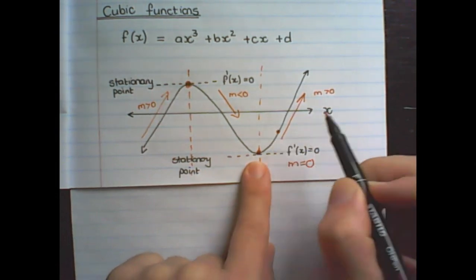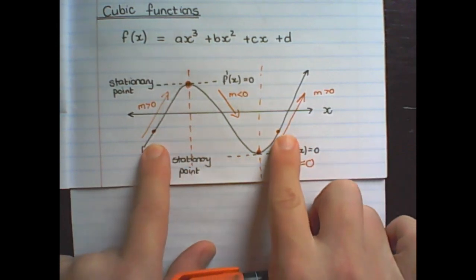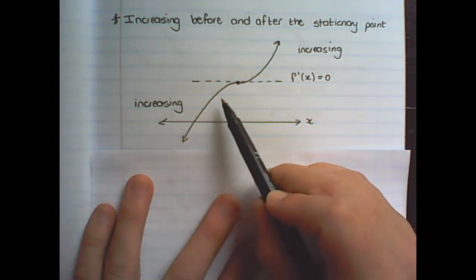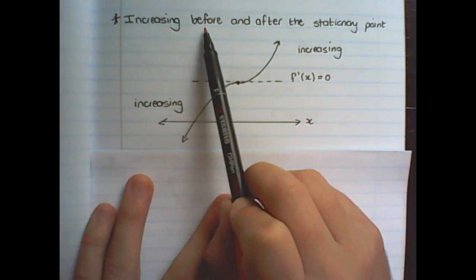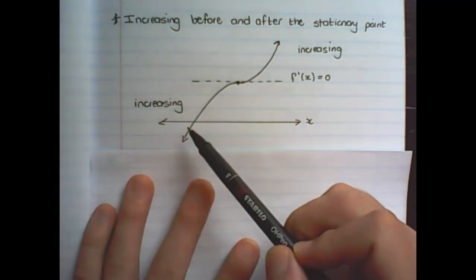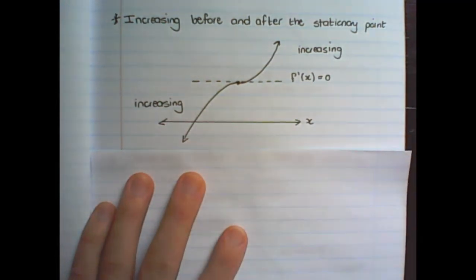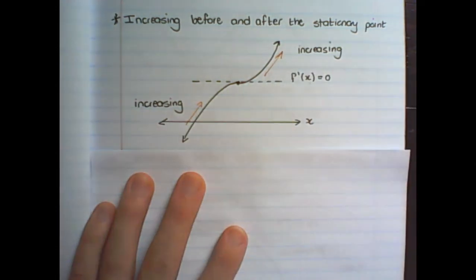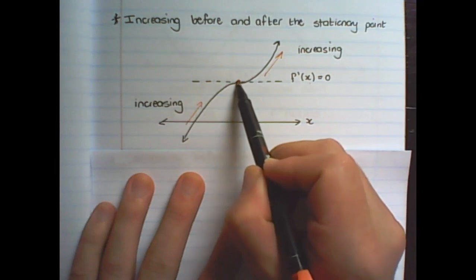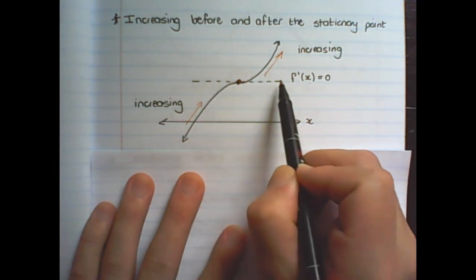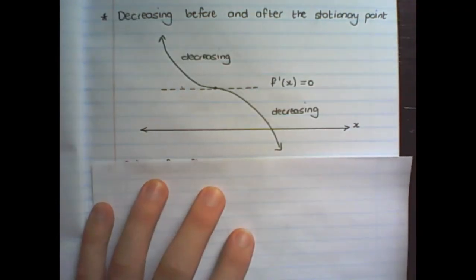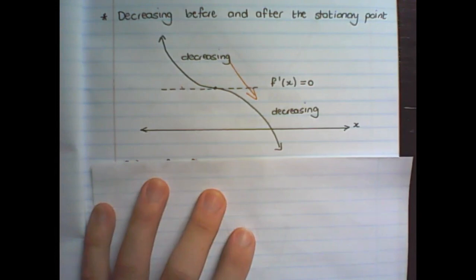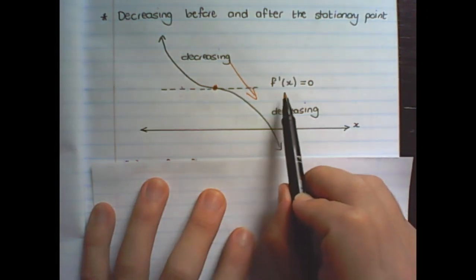It is then possible to have two tangent lines that are parallel to each other. One possible variation of a cubic function is a function that is increasing before and after the stationary point. In this cubic function, instead of having two stationary points, it only has one point, and you can see from left to right that the gradient is ever increasing except at that one value where the gradient is equal to zero. We can also have a function that is decreasing before and after the stationary point, where at the stationary point the gradient is equal to zero.